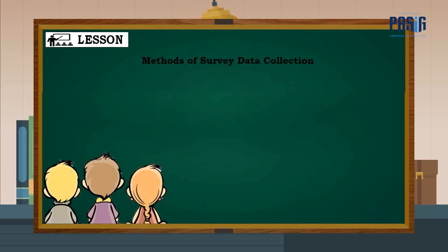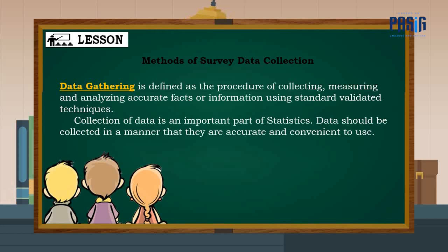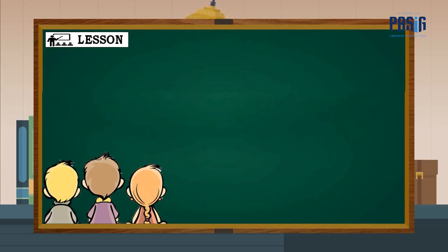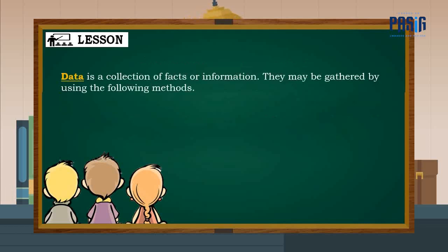Now let us discuss methods of survey data collection. Data gathering is defined as the procedure of collecting, measuring, and analyzing accurate facts or information using standard validated techniques. Collecting data is an important part of statistics. Data should be collected in a manner that is accurate and convenient to use. Data is a collection of facts or information, and may be gathered by using the following methods.